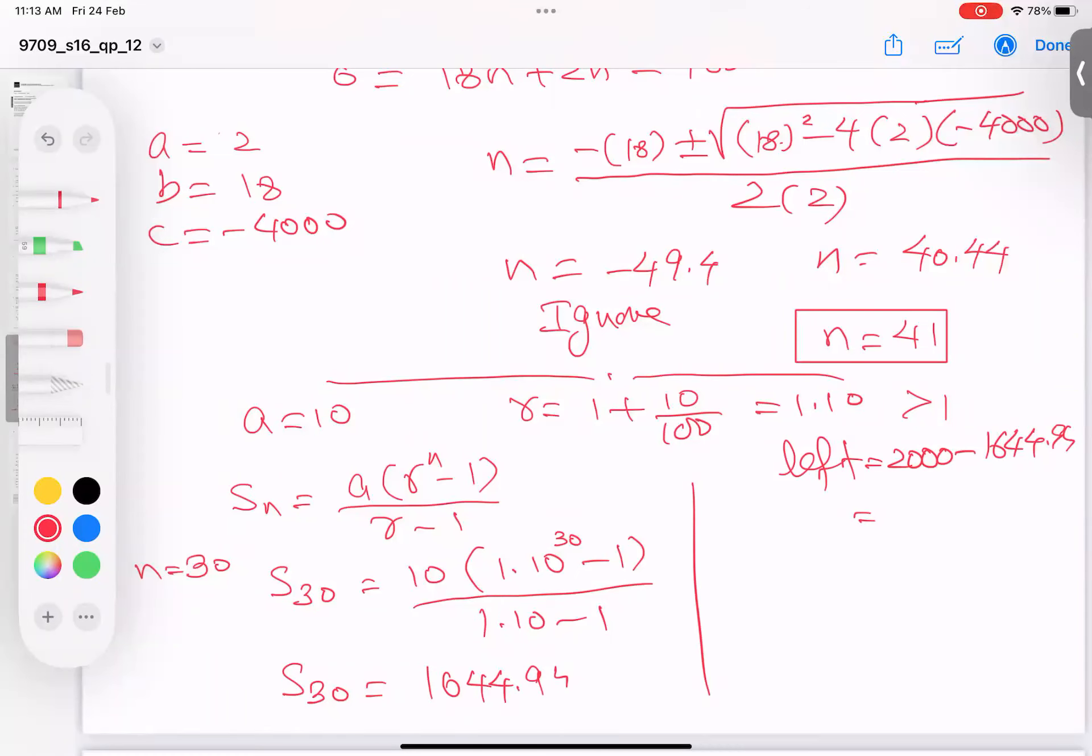How much water is left? From 2000 subtract 1644.94, which gives 355.05 liters left behind. The question asks for the percentage from total water. So 355.05/2000 × 100 = 17.75%. Therefore, approximately 17.75% of water will be left behind after 30 days.